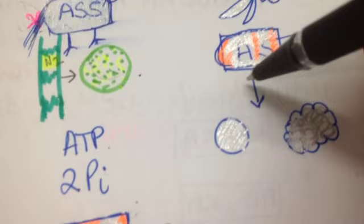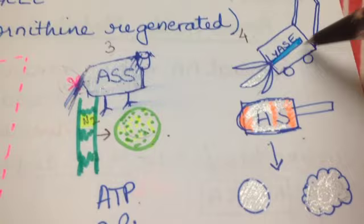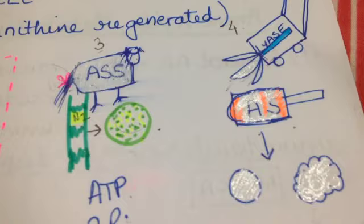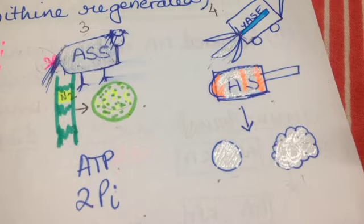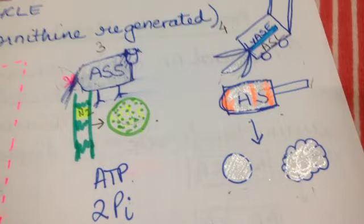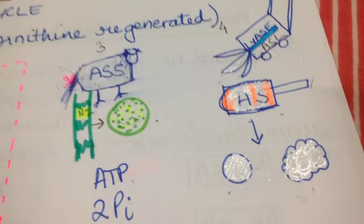The fourth reaction: argininosuccinate — the silver-coated candy — is cleaved by a lawnmower-type machine representing argininosuccinate lyase (ASL), which is a lyase. It is cleaved into arginine, the fully silver product, and fumarate, represented as fumes.